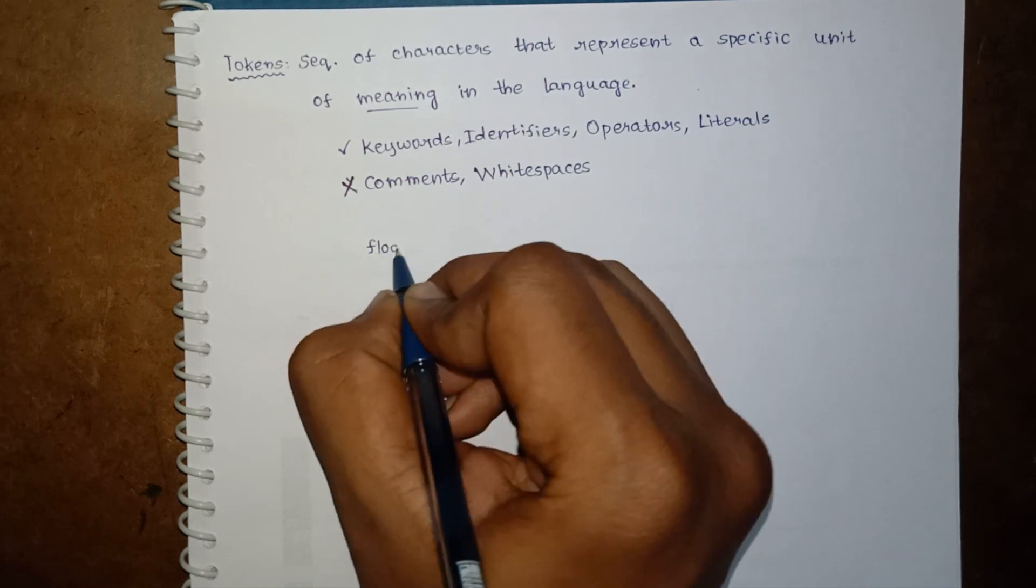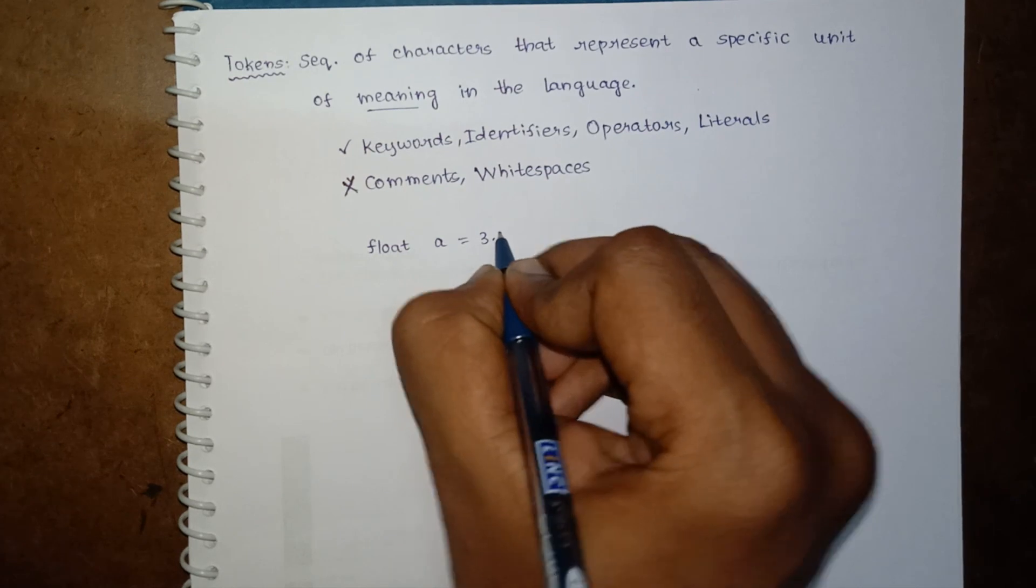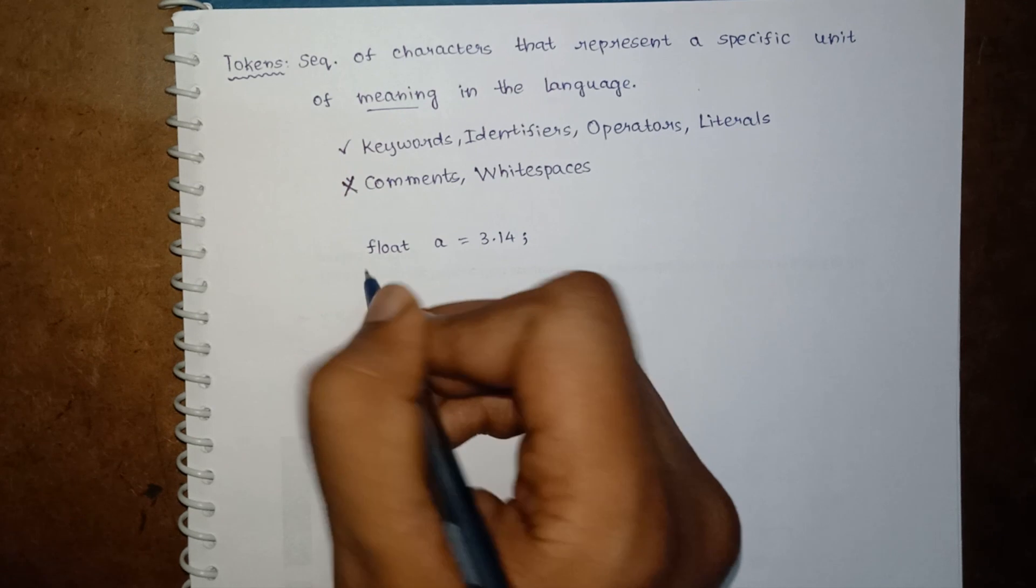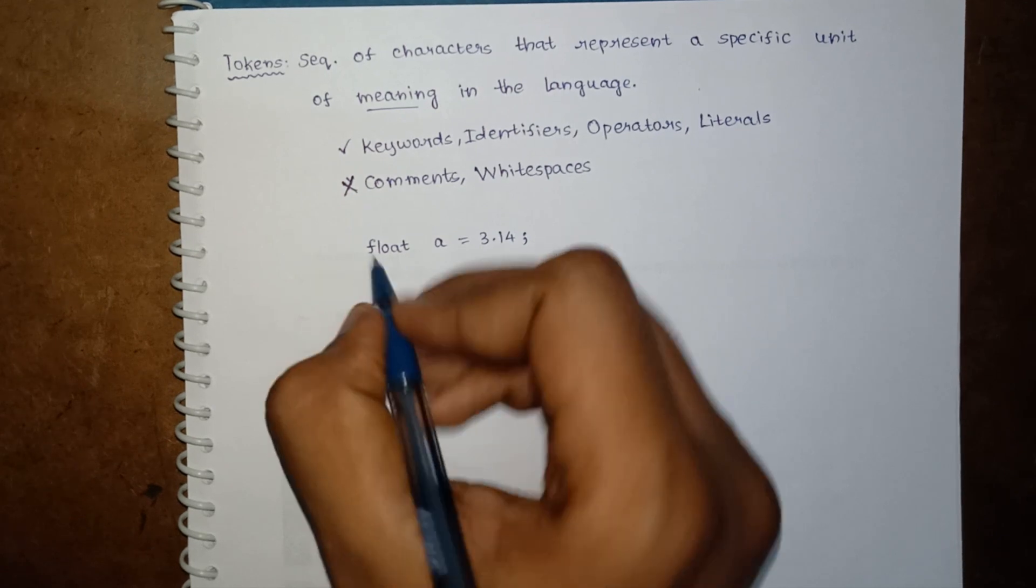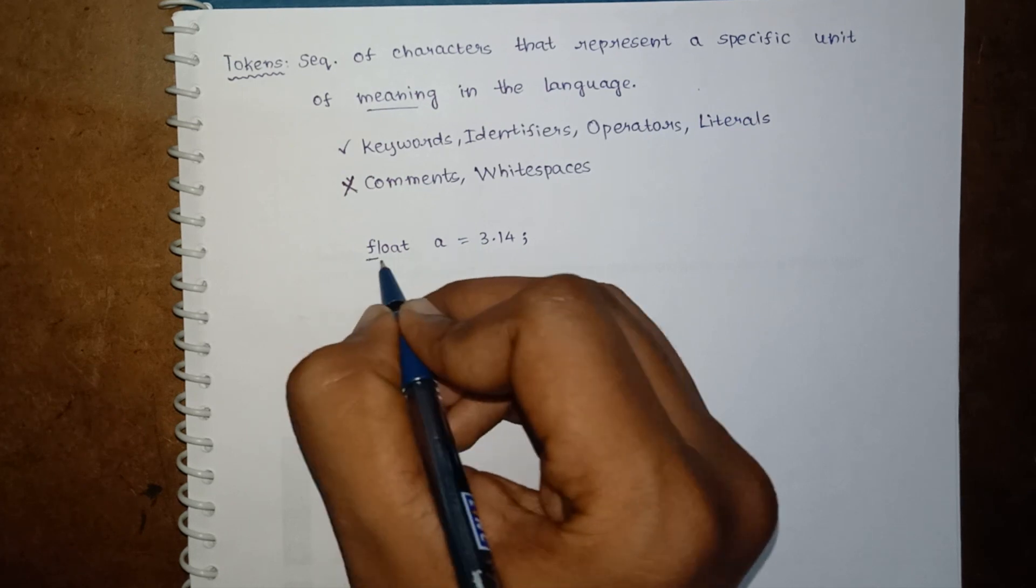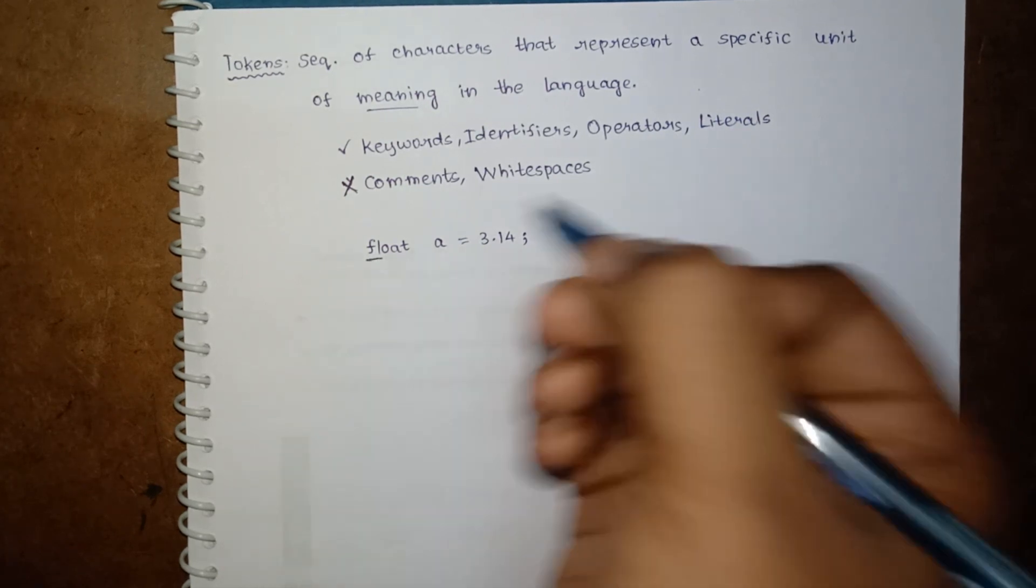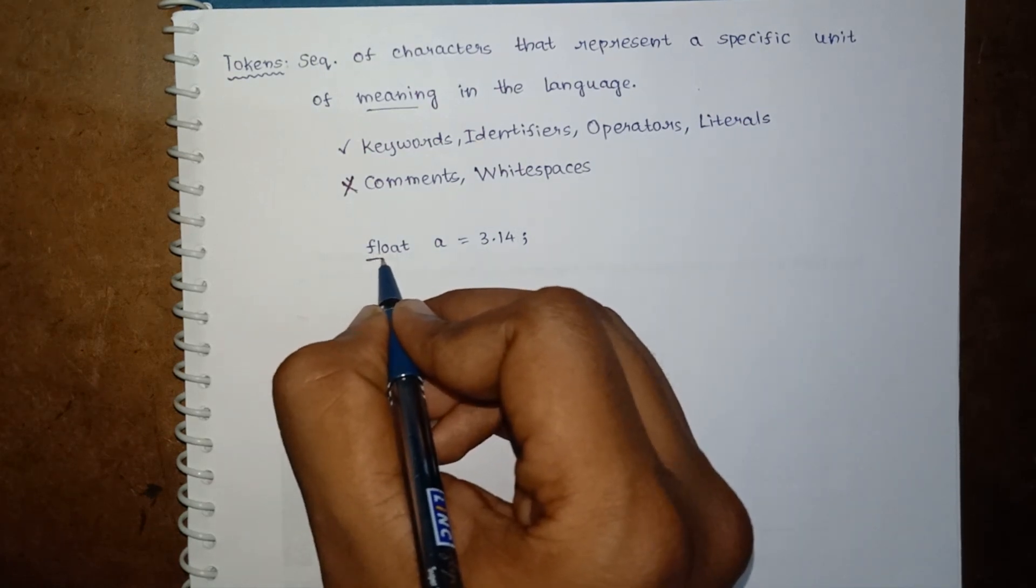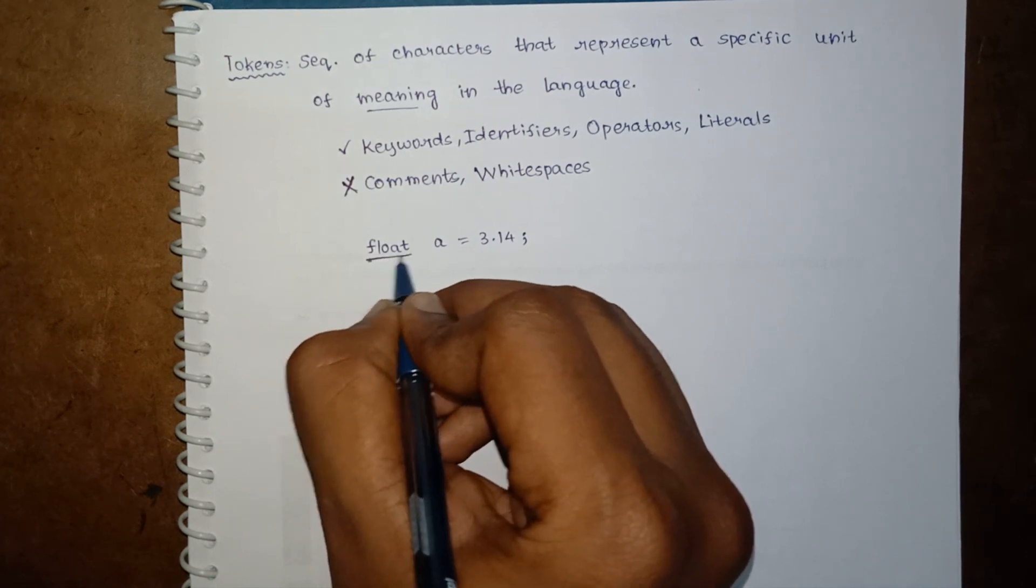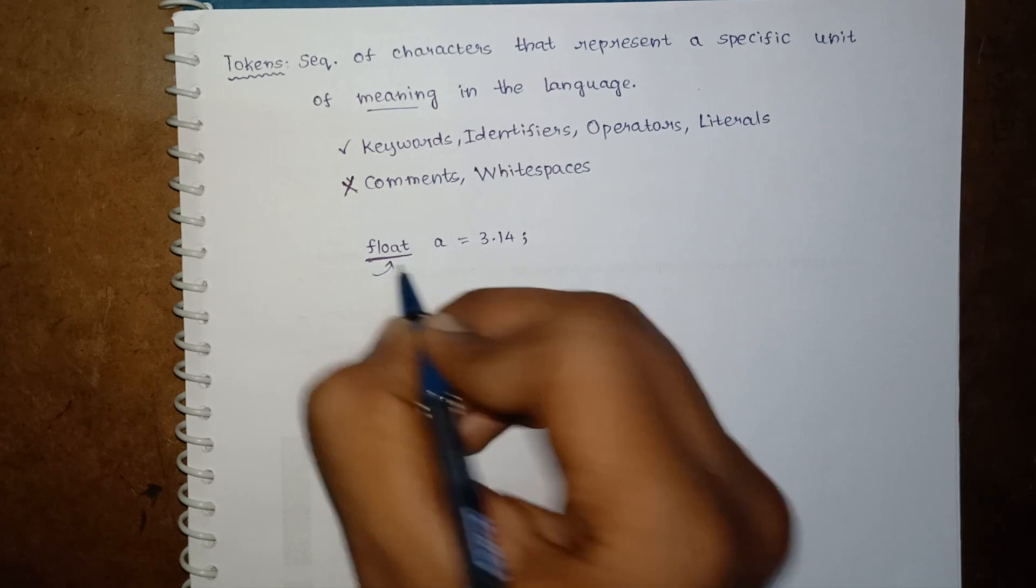consider a simple statement in C language: float a equals 3.14. Now the compiler will read it character by character. First it will read only 'f', it doesn't get any meaning. Then it will read 'f' and 'l', the same, it doesn't get any meaning as 'fl' is not any keyword. So until it reaches this 't', where it finally makes sense, it's a keyword.